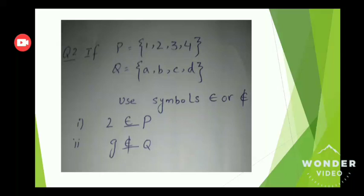Page number 4, question number 2 — two sets are given. P is the set of {1, 2, 3, 4} and Q is the set of {A, B, C, D}. Use the symbols 'belongs to' or 'not belongs to'. Blank 1: 2 _ P. Check: in set P there are 4 numbers and 2 is part of set P, so we put the sign 'belongs to' (∈). Number 2: G _ Q. In set Q there are 4 alphabets A, B, C, D — G is not present there, so we put the sign 'does not belong to' (∉).